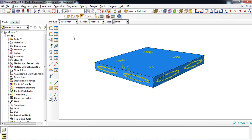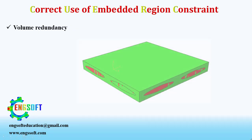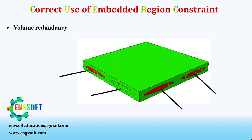However, there is a tiny tip that you must consider while using this technique. There is a volume redundancy in the matrix cube at those regions where the woven fabric also exists. This redundancy causes extra stiffness and strength in the final results.